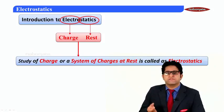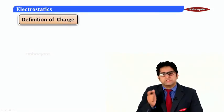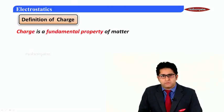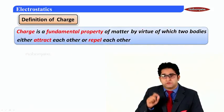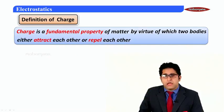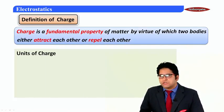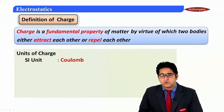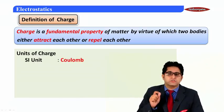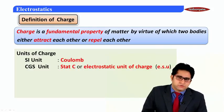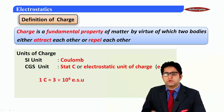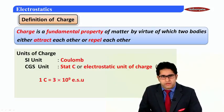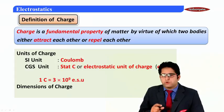Charge is the fundamental property of matter by virtue of which two bodies can either attract or repel each other. The SI unit of charge is coulomb. The CGS unit of charge is stat coulomb, also called electrostatic unit (ESU). The relation between the two is: 1 coulomb = 3 × 10⁹ ESU.